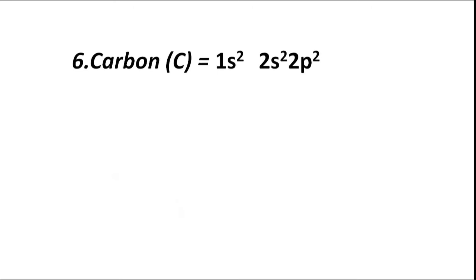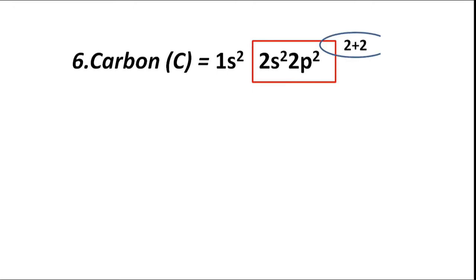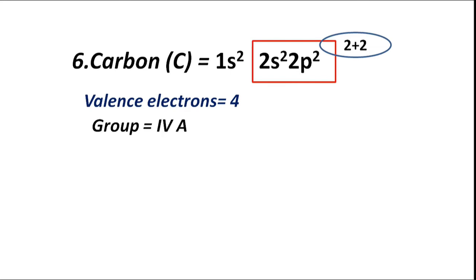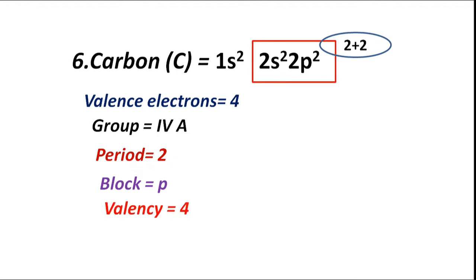Atomic number 6, carbon (C), has electronic configuration 1s2 2s2 2p2. The valence shell is L; 2s and 2p sub-shells are present in the second shell, having valence electrons 2 plus 2, equal to 4. Therefore group 4A or IVA, period 2. Highest coefficient is 2, therefore period is 2. Block P — valence electrons fill p sub-shell. Valency is 4.